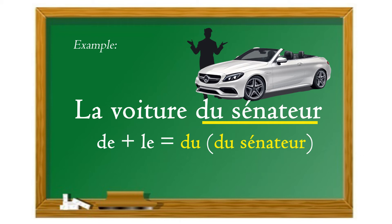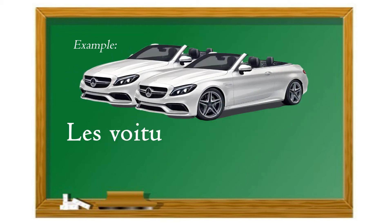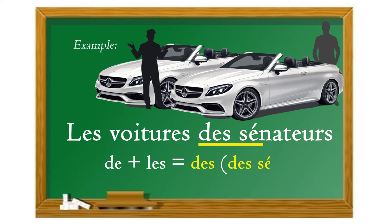Mais au pluriel, on pourrait dire « les voitures des sénateurs ». Ce qui est contracté, c'est la préposition « de » plus « les », donc l'article défini au pluriel, et ça nous donne « des » — les voitures des sénateurs.